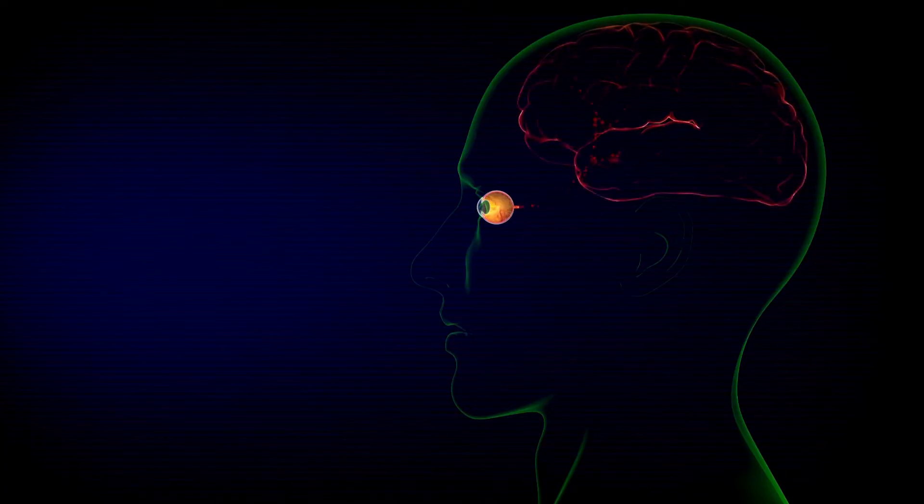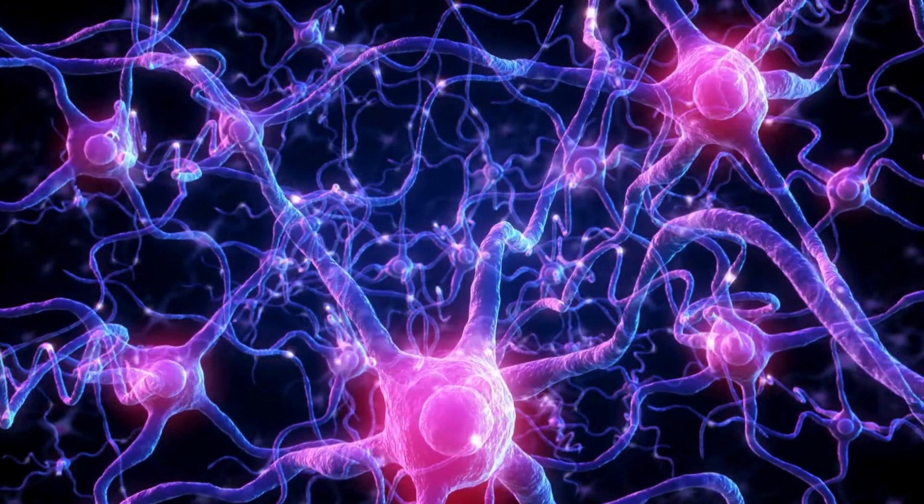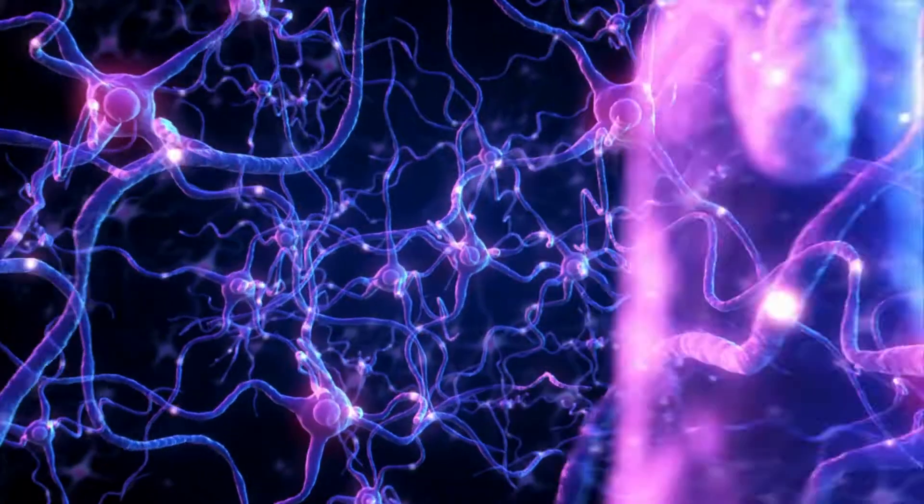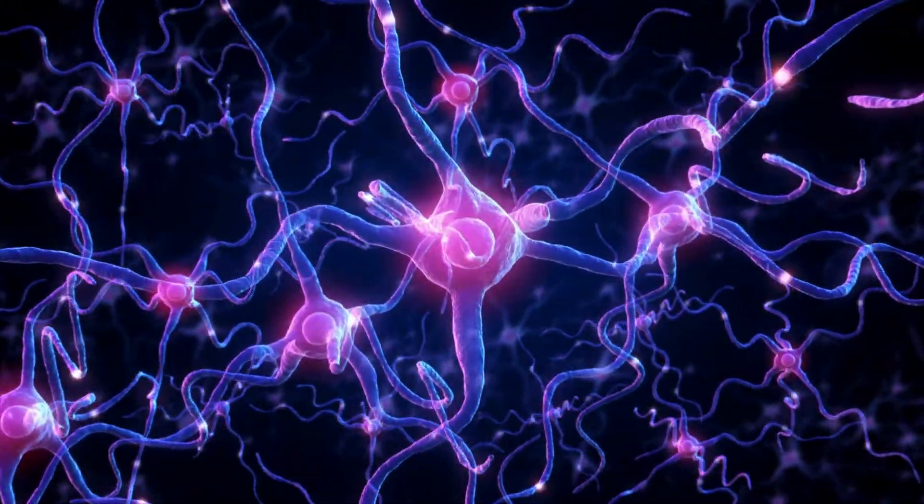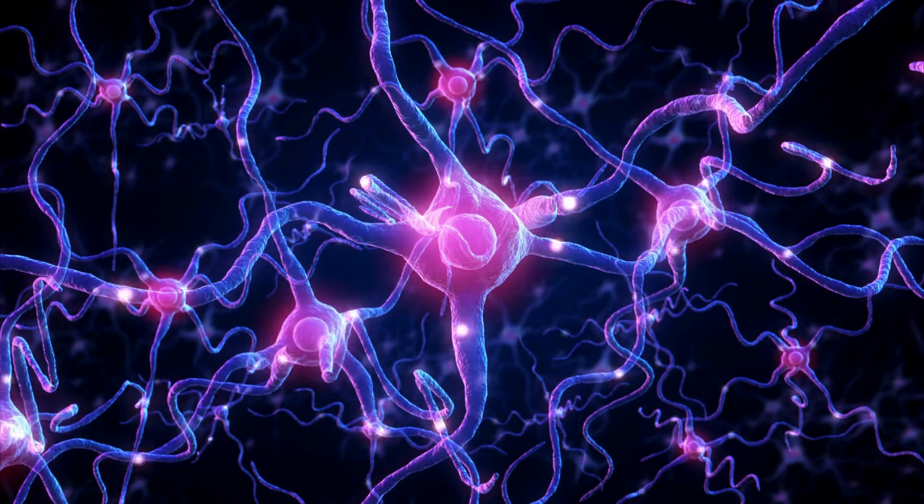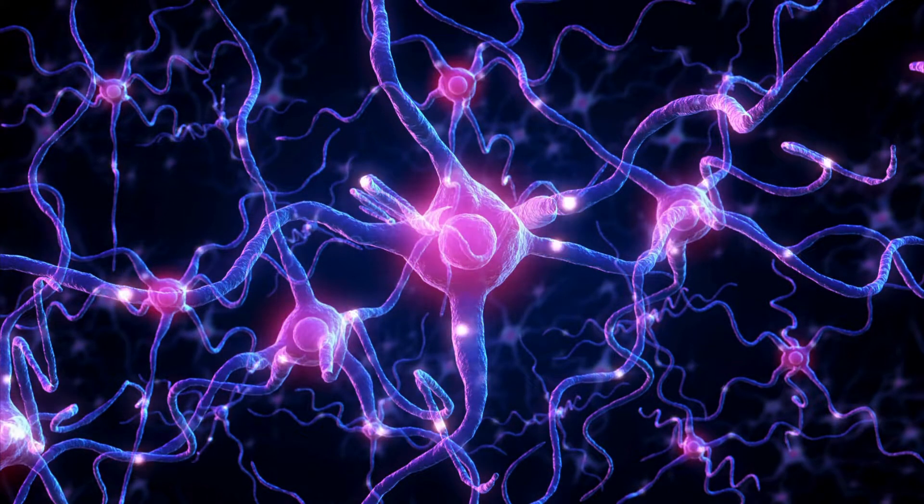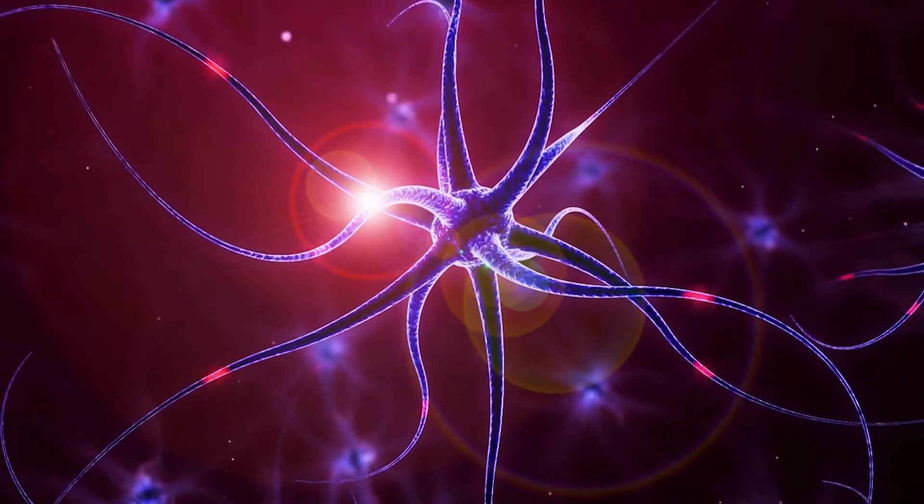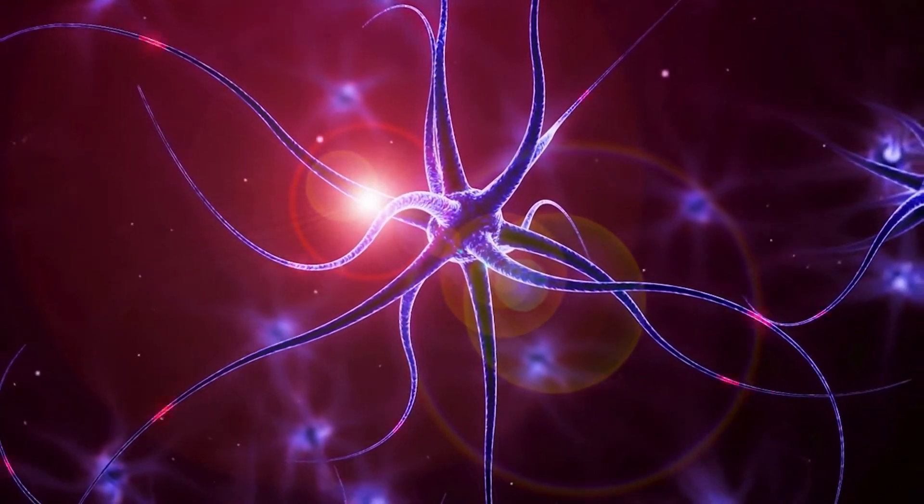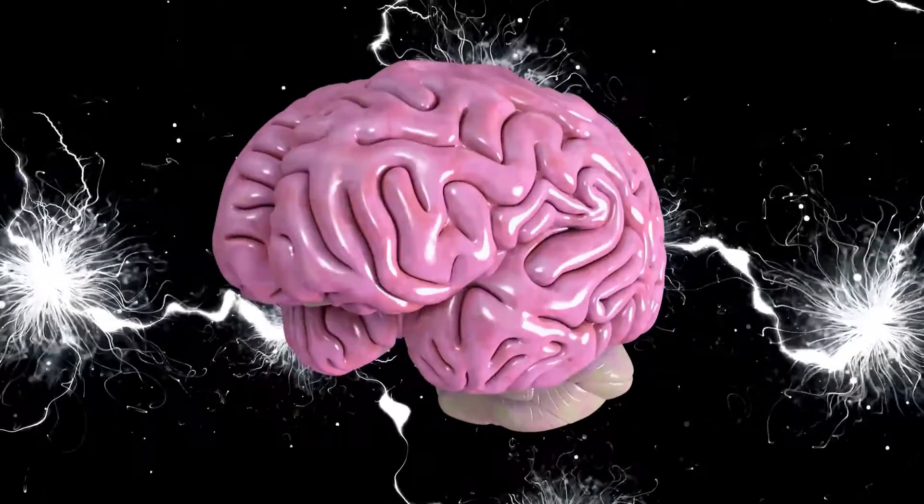Then we have the lens, constantly changing shape to focus light onto the retina at the back of the eye. But here's where it gets truly mind-boggling. The retina contains over 120 million photoreceptor cells, rods and cones, that convert light into electrical signals. These signals then travel through the optic nerve to the brain, where they're processed into the images we see.